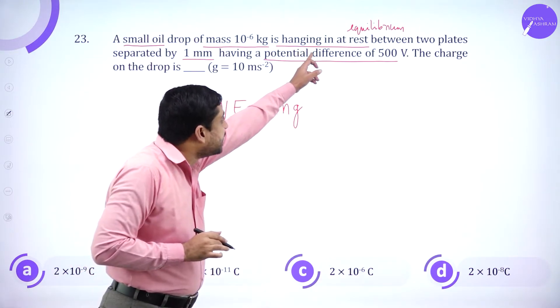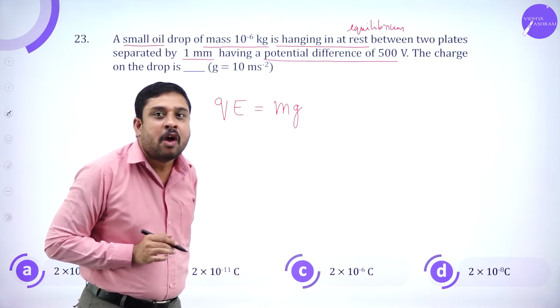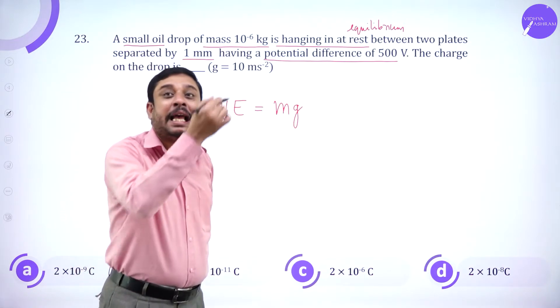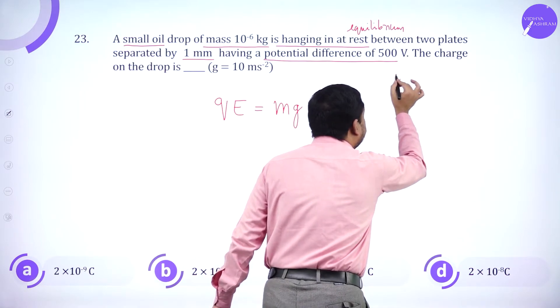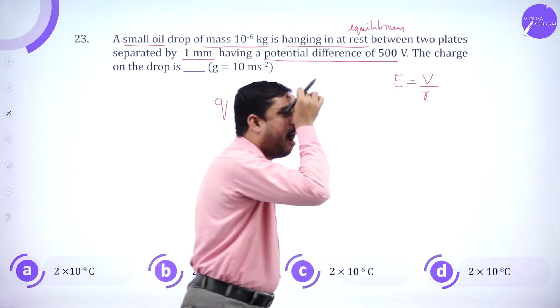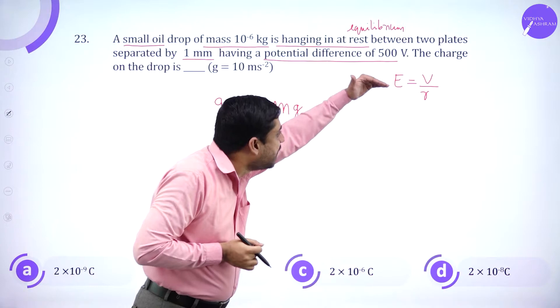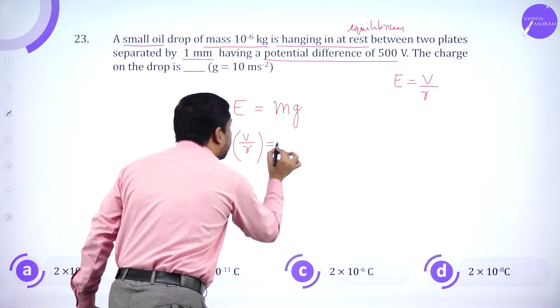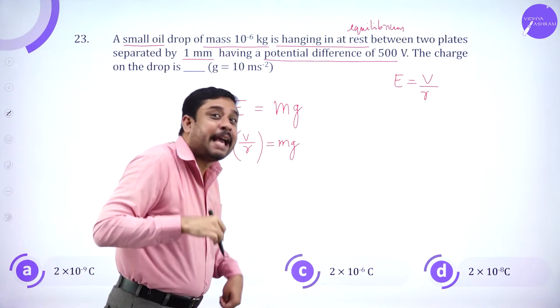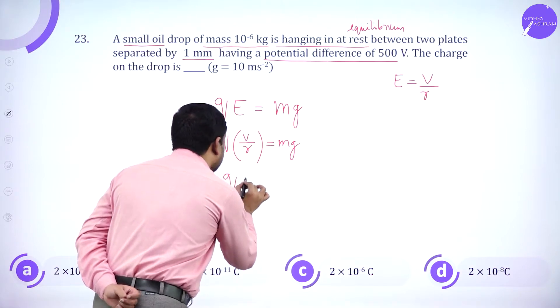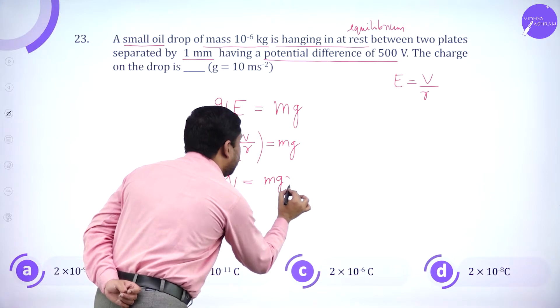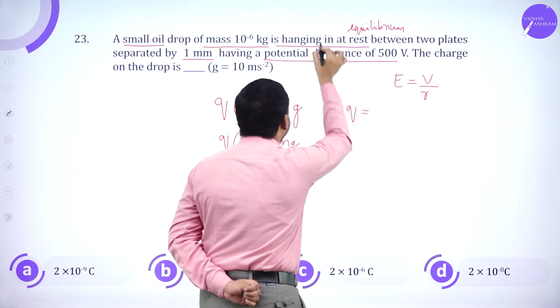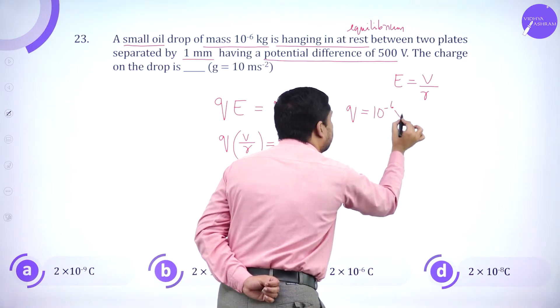Here, a charged oil drop is at rest, which means the force due to the electric field should be equal to its weight. So force due to the electric field is Q into E. We know E is always V divided by R. Electric intensity is electric potential divided by distance.